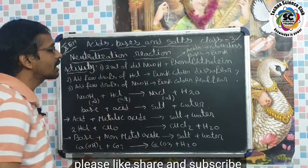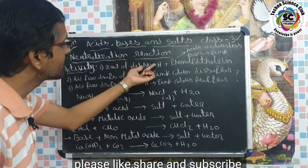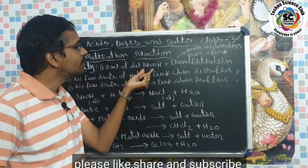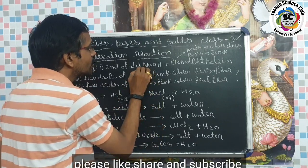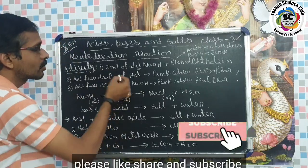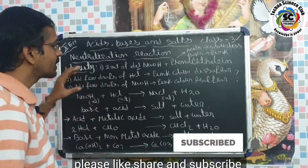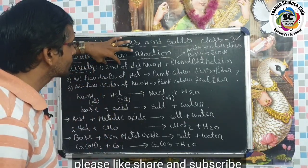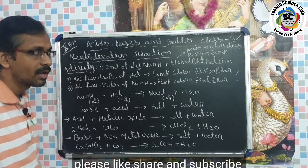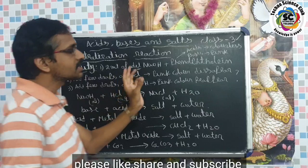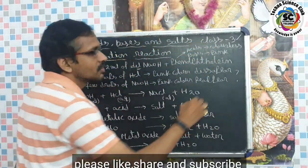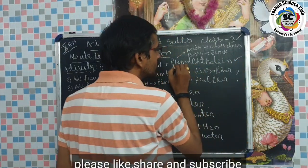We are going to do an activity. Take a test tube and add 2 ml of dilute NaOH — dilute sodium hydroxide. To this, add dilute HCl — dilute hydrochloric acid — and phenolphthalein indicator. You know about the phenolphthalein indicator; it is used to identify acids and bases.